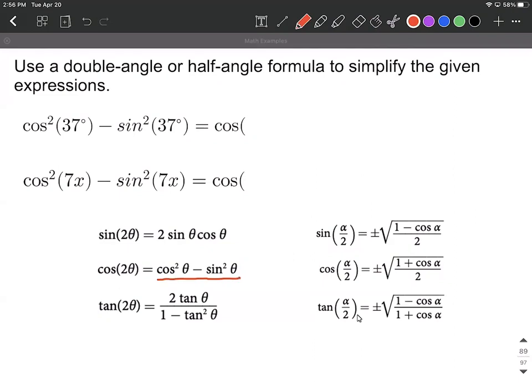This is going to give us a cosine of two times whatever theta is. In our first example, it's cosine squared of 37 degrees. The 37 degrees is occupying the same spot as this theta. It's also occupying the same one as this theta.